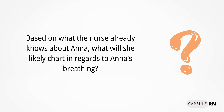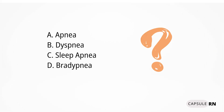Remember Anna? Based on what the nurse already knows about Anna, what will she likely chart in regards to Anna's breathing? Is it A, apnea; B, dyspnea; C, sleep apnea; or D, brain apnea? If you said B, dyspnea, you are correct. Dyspnea is shortness of breath or difficulty breathing.